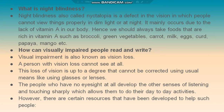One of the most important defects related to eyes is night blindness, also called nyctalopia. It is a defect in vision in which people cannot view things properly in dim light or at night. It mainly occurs due to the lack of Vitamin A in our body and is a type of deficiency disease.